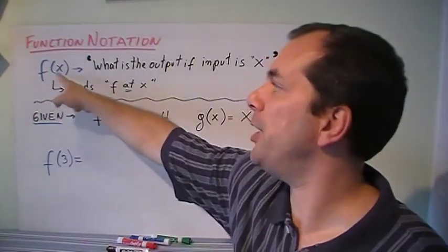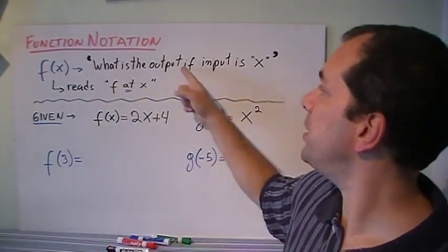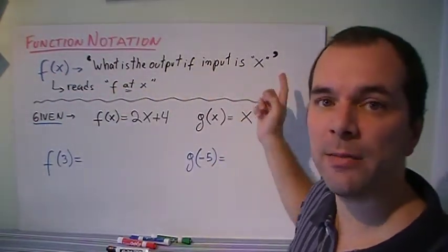The function is f and the input is x in this case. So basically what that is saying is what is the output if the input is x? It's that simple.